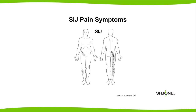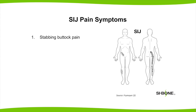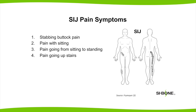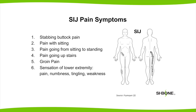In an SI joint history, there are typically seven points that you can listen for. One, do they have stabbing buttock pain — they may describe it as an ice pick, stabbing, or dagger-like feeling over their upper buttock area. Two, do they have pain with sitting? Three, do they have pain when they transition from sitting to standing or standing to sitting? Four, do they have pain going upstairs? Five, do they have groin pain? Six, do they have leg pain? And seven, do they have pain that wakes them up at night if they roll over on the affected side?